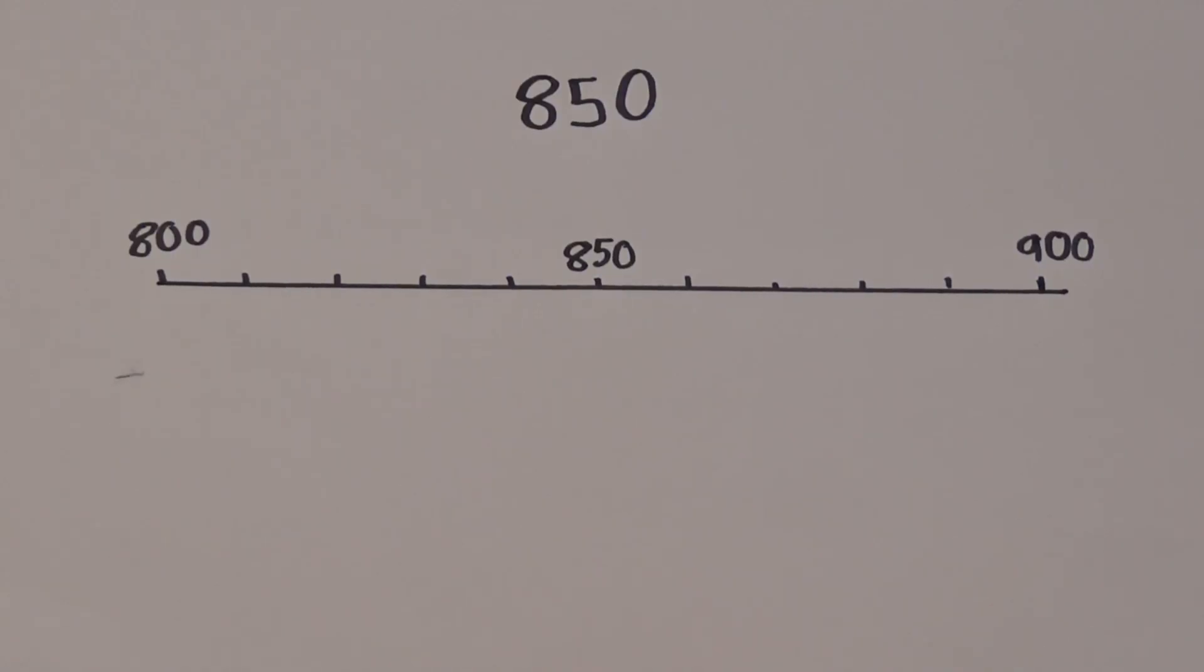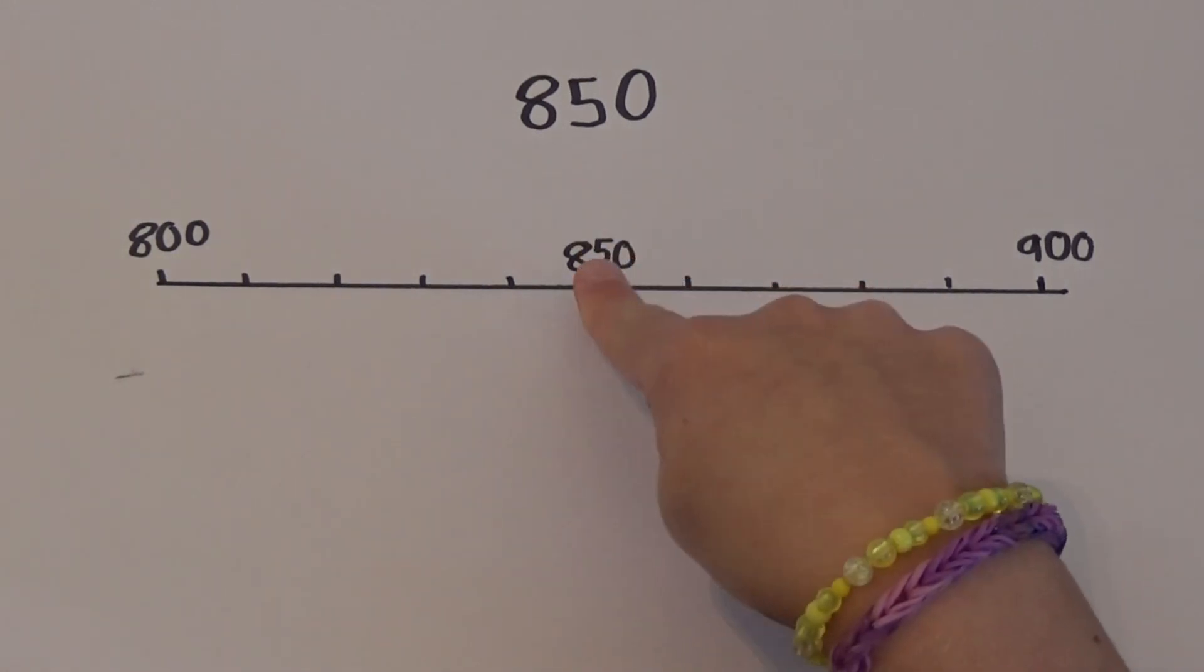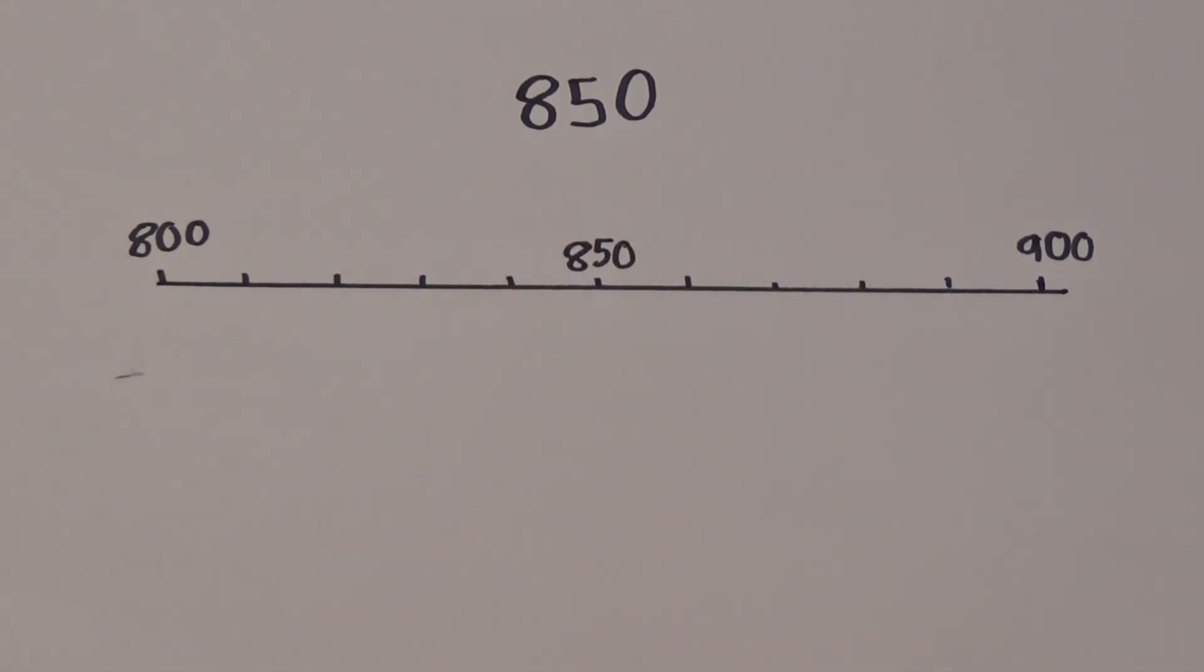This time we're going to look at what happens when the tens digit is a 50. I'm going to look at rounding the number 850. I know 850 falls between 800 and 900, so I've written these at each end. I can see straight away that 850 is right in the middle of 800 and 900. I need to count on 50 from 800, but I also need to count on another 50 to get to 900.